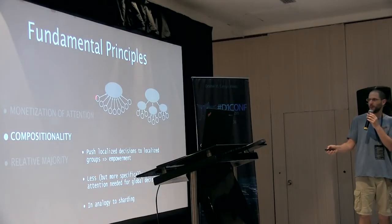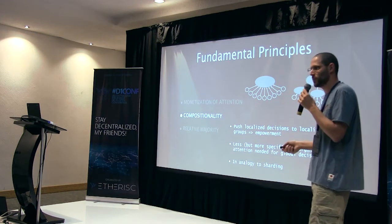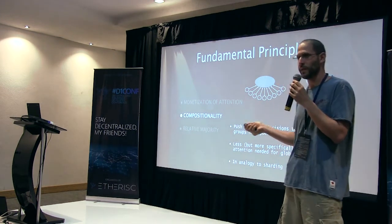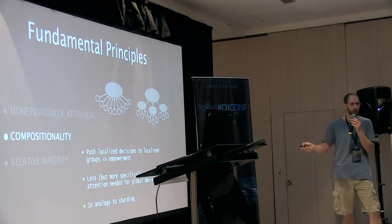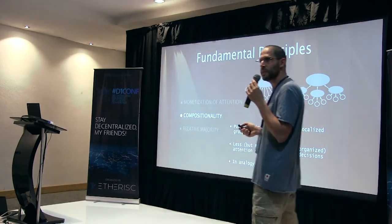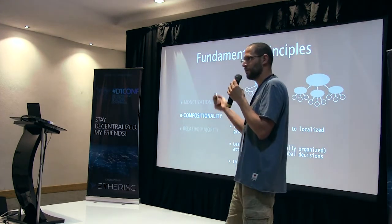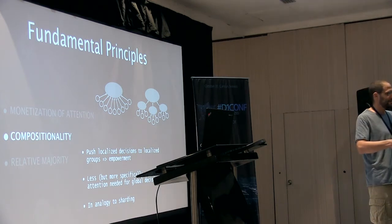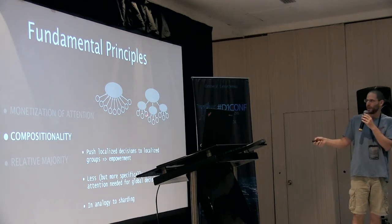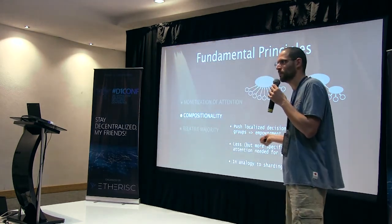Let's do a quick test. If we have nine equal individuals, how many need to agree to form a majority decision? Five — correct. Now in the compositional structure, how many individuals need to agree to form a decision at the top level, assuming sub-groups are equal agents? Four — exactly. So not only do we push local decisions into localized groups, we also increase the attention bandwidth of the higher group. You may argue we just hurt resilience because the system can be taken over with fewer agents, but not every configuration of four people can take over the system — so you can actually gain resilience in that structure.